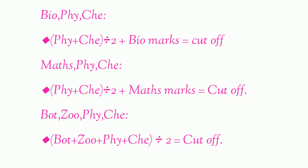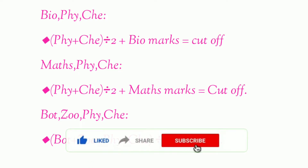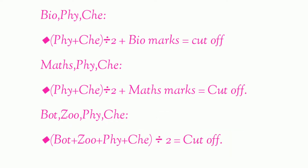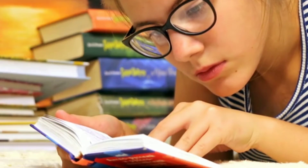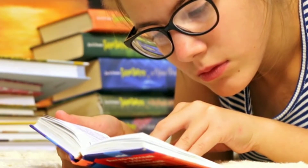For cutoff calculation: you have biology, physics, and chemistry. These three subjects — take physics and chemistry and divide by 2 as well, because you have biology marks too. So if you add these two marks, you will get the cutoff. Then add math, physics, and chemistry. If you have pure science with botany, geology, physics, and chemistry, you add 4 subjects and divide to get your cutoff marks.